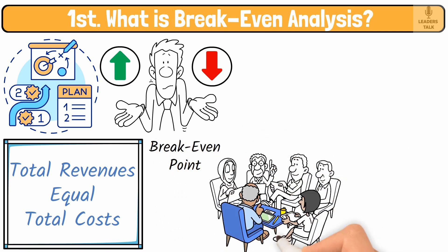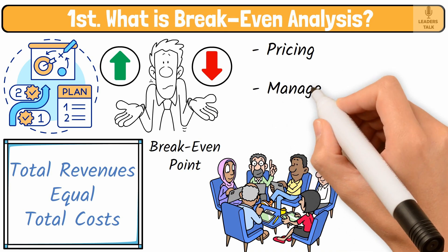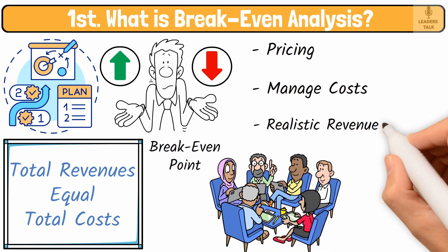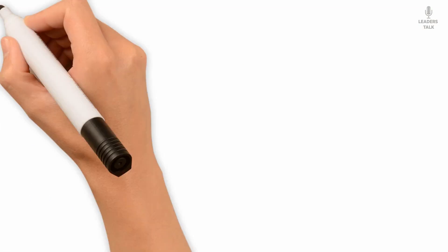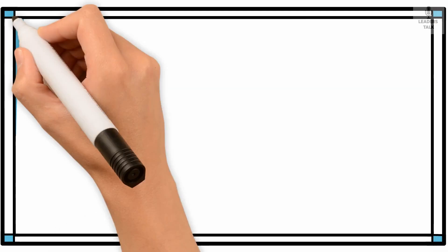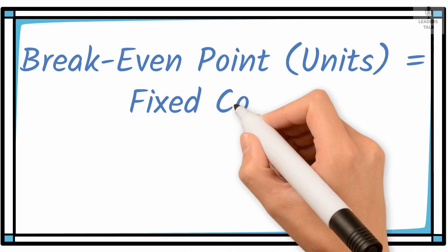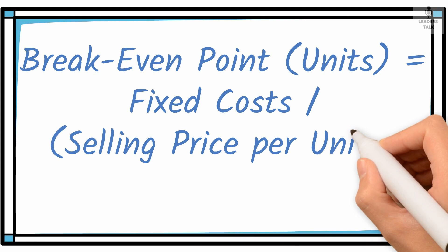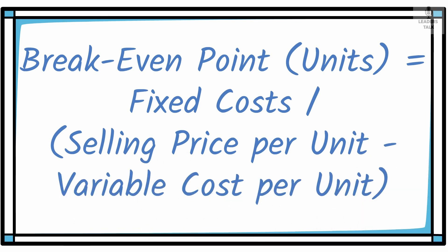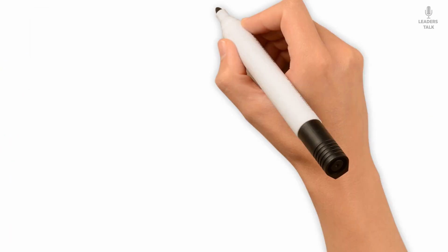It's a pivotal moment that helps businesses plan their pricing, manage costs, and set realistic revenue goals. The formula for breakeven point, or BEP, is breakeven point units equal fixed costs divided by selling price per unit minus variable cost per unit. Let's break this formula into pieces.